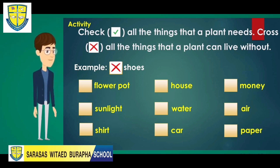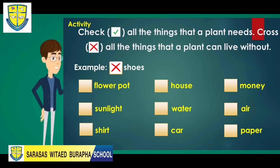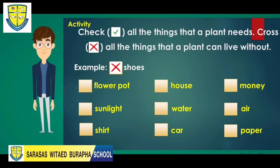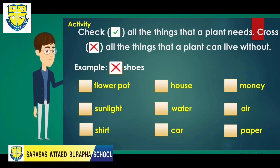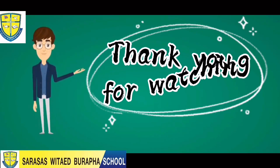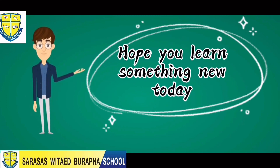Now it's your turn to answer the things below. In the first lane we have: flower pot, house, and money. In the second lane we have: sunlight, water, and air. In the third lane we have: shirt, car, and paper.